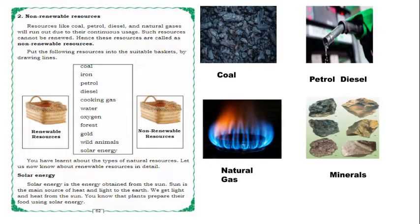Now we have learned renewable and non-renewable resources. You can do an activity: there are baskets for renewable resources and non-renewable resources. You have to draw a line to the correct basket for each source — for example, is coal renewable or non-renewable? Now, next is solar energy. What is solar energy?